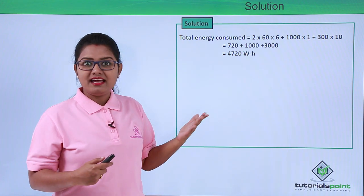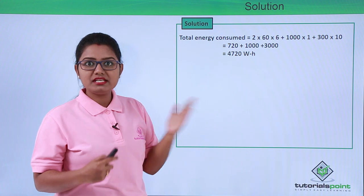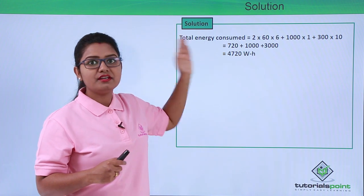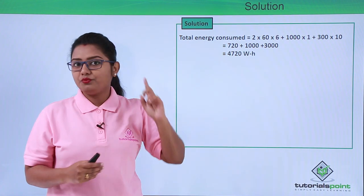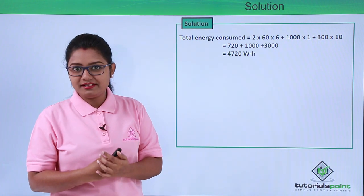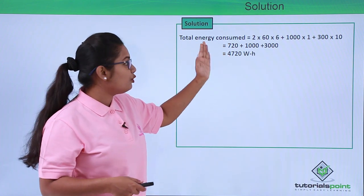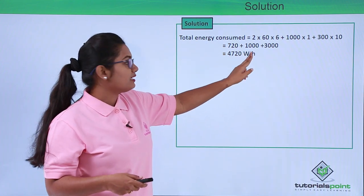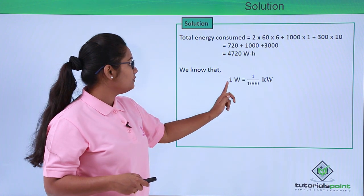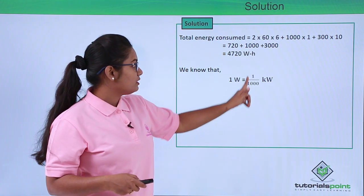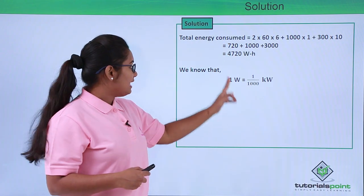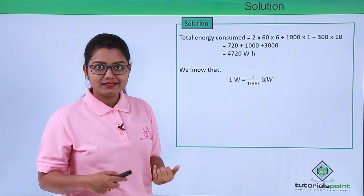The question asks us to find the number of units of energy consumed, so we need to convert this total energy into units. We know that one unit equals one kilowatt-hour, which is the commercial unit of energy. We need to convert from watt-hours to kilowatt-hours, using the relation: 1 watt = 1/1000 kilowatt, since 1 kilowatt = 1000 watts.